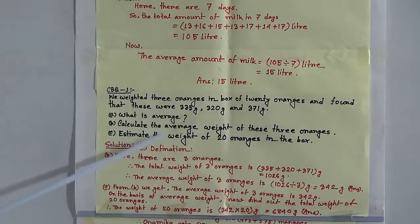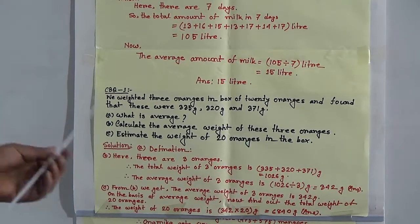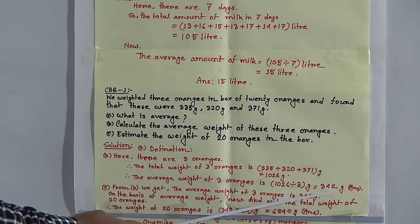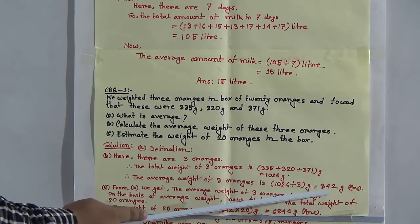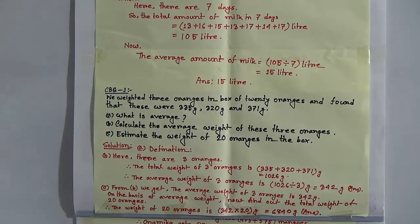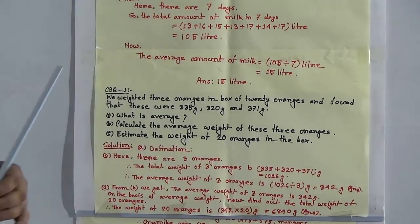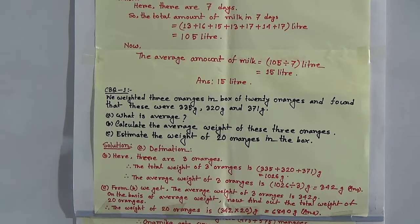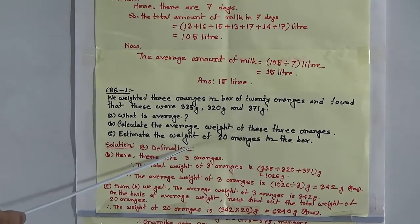Next: estimate the weight of 20 oranges in the box. From part B, we found the average weight of three oranges is 342 grams, which means the weight of one orange is 342 grams. By using this estimation, we find the weight of 20 oranges. The number of quantities is 20, and the weight of one orange is 342, so we multiply 342 by 20 to get the total weight of 20 oranges.